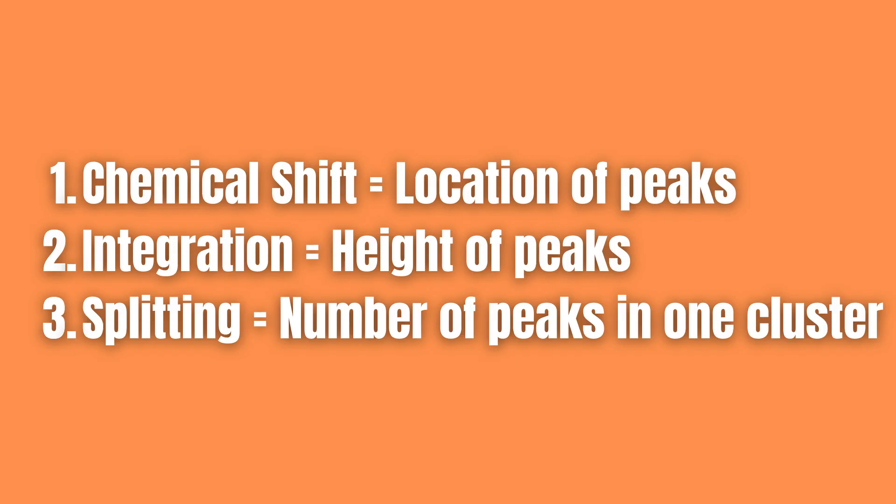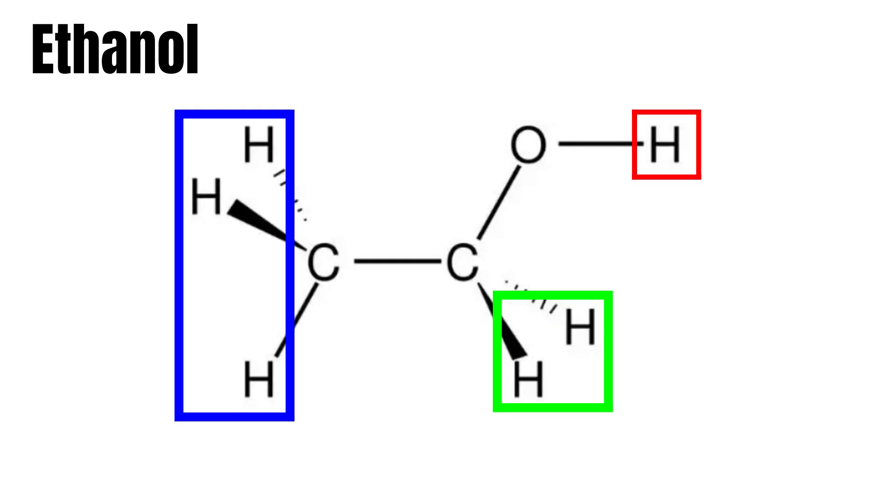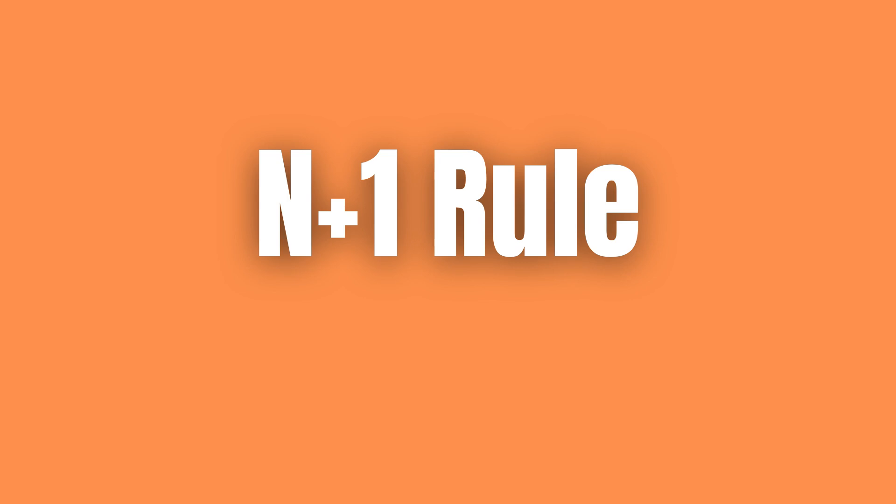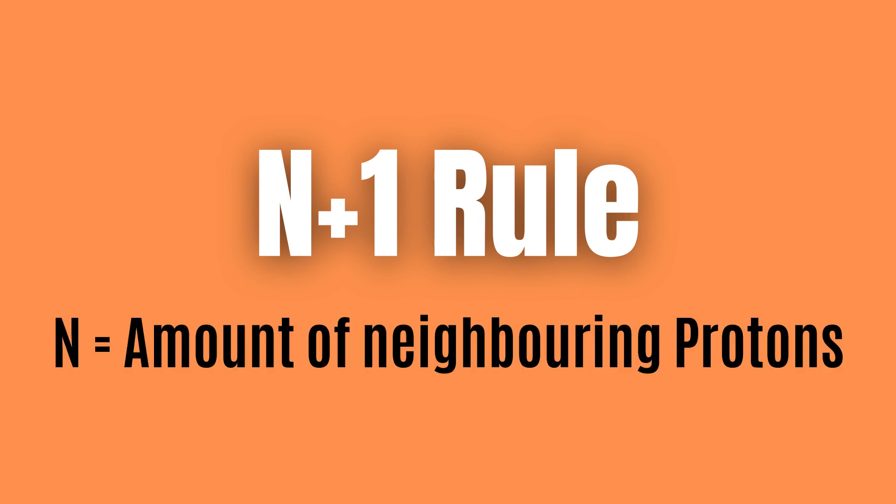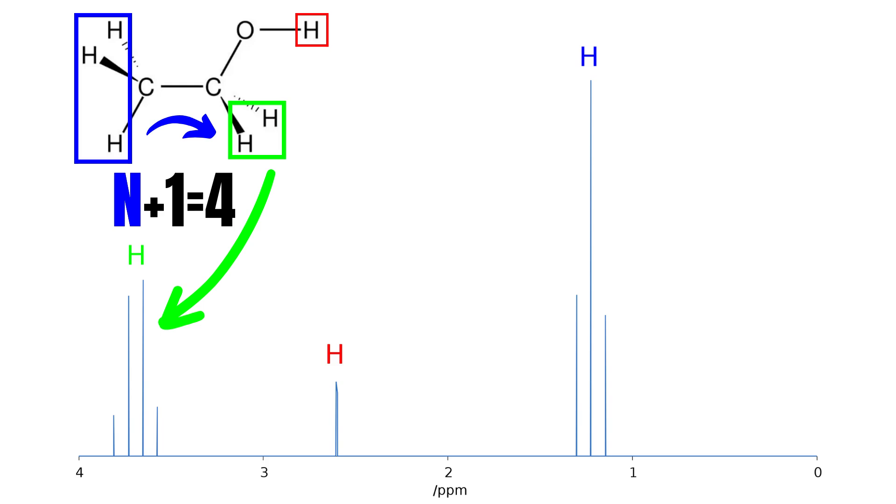Third is splitting, which has to do with the number of peaks in one cluster. This is dependent on the number of neighboring protons, in this case meaning the protons attached to the closest carbon atom. In addition, you have to follow the n plus one rule, meaning that if there are three neighboring protons, there will be three plus one equals four peaks for that proton group.